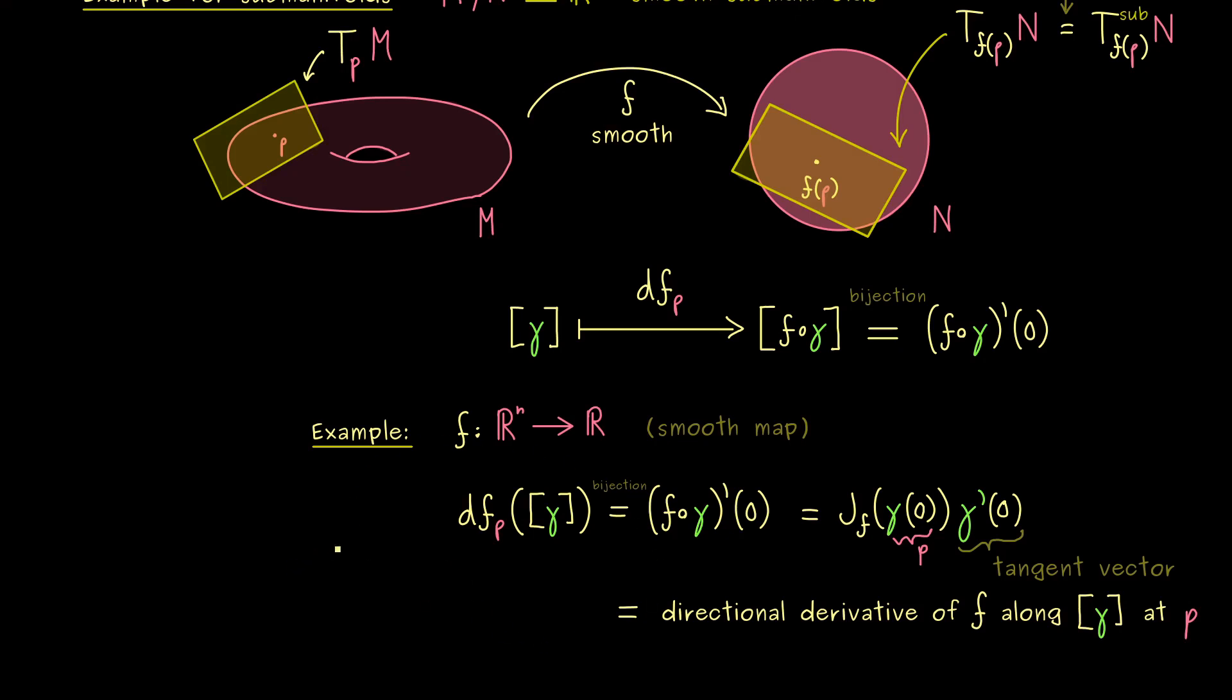For example, we should check how the differential looks like if we go into local charts with the manifolds, because there we would also expect the behavior like a Jacobian matrix. Let's meet there and have a nice day. Bye!